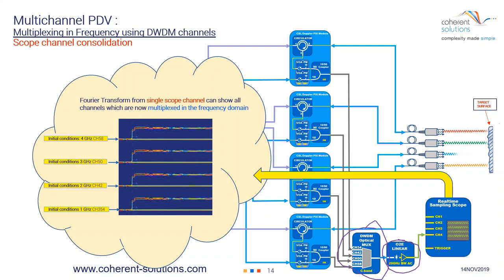You can choose how much you want to separate these channels depending on the spare bandwidth of your oscilloscope. In this way, you've eliminated three ODE converters and combined everything into a single scope channel, leaving the other three scope channels for even more signals.